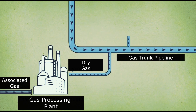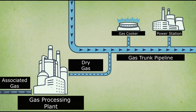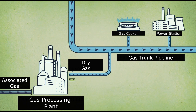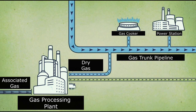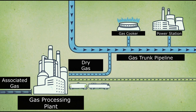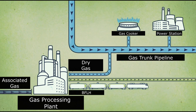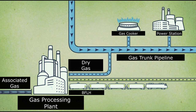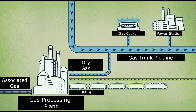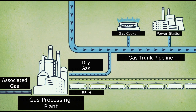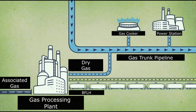Dry gas goes directly into the burners of gas stoves for heating houses and electricity generation. Another gas processing product is a mixture of gases called the broad fraction of light hydrocarbons, or BFLH. In fact, gas processing acts as a filter that separates substances valuable to petrochemicals from conventional fuel gas.